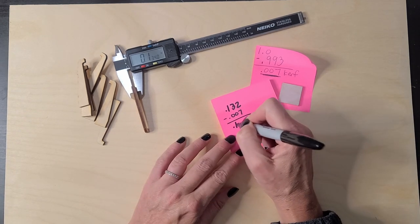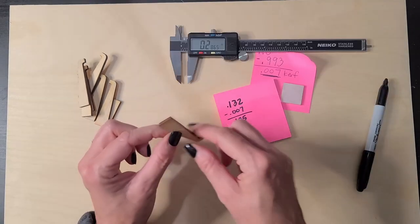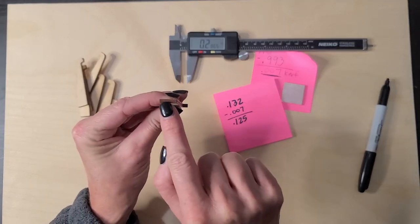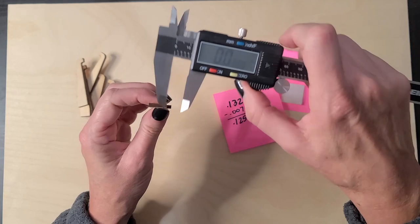So that's the number I'm going to write down. 0.132. And I'm going to subtract my kerf, which was 0.007. And I do use calculator because these decimals are not my friend. So it is 0.125.